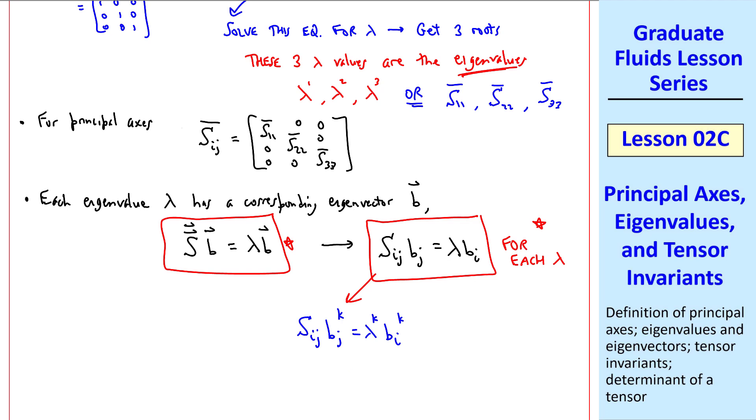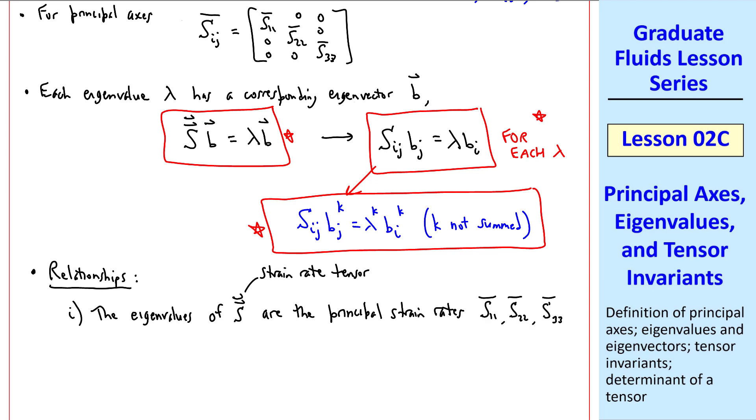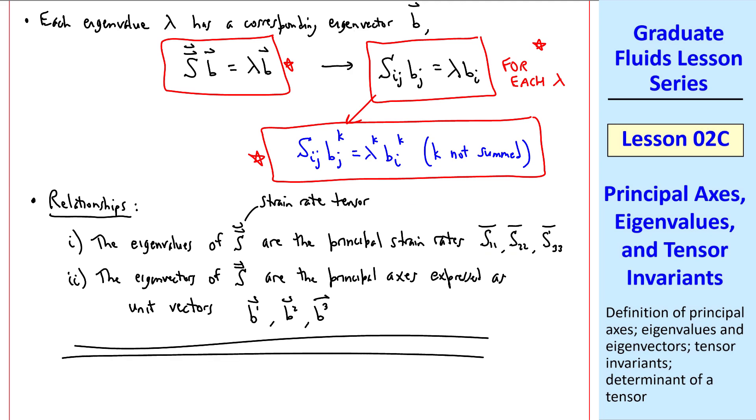In tensor notation, we write Sij, Bj, equal lambda Bi. Keep in mind that there's one of these for each lambda. That's why we use the superscripts. We write Sij, Bj superscript K, equal lambda superscript K, Bi superscript K. But here we have a problem. K is repeated in this term, but not in this term. That's because we don't want to sum K. So I write K not summed. This is the proper way to write all three eigenvectors. I stress the relationships between eigenvectors, eigenvalues, and principal axes. For the case where S is a strain rate tensor, the eigenvalues of S are the principal strain rates. S11 bar, S22 bar, and S33 bar. The eigenvectors of S are the principal axes expressed as unit vectors, B1, B2, and B3. Hopefully this helps you understand eigenvalues and eigenvectors and principal axes.